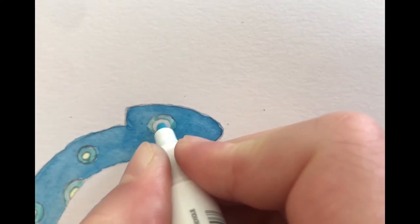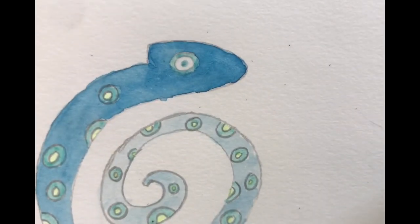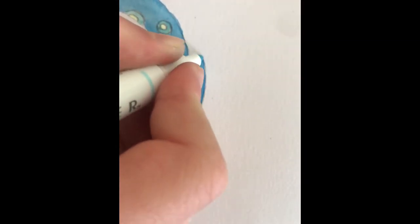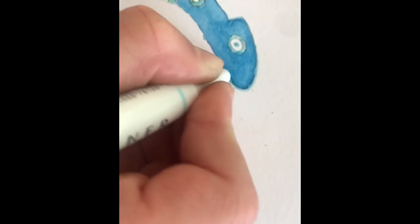We're almost finished. We're just going to do the second last step now, which is the eye. So just put a little dot in the center of your two circles. I chose the color of the body, but you don't have to.